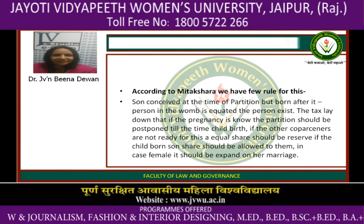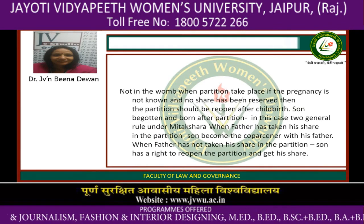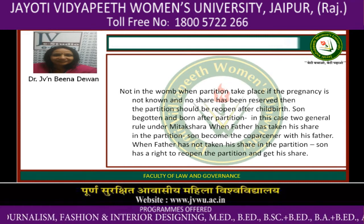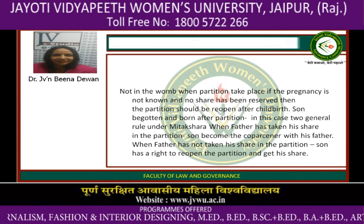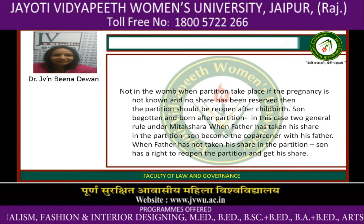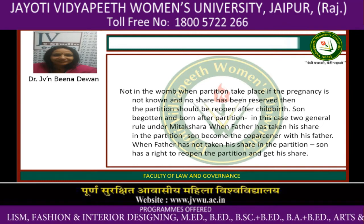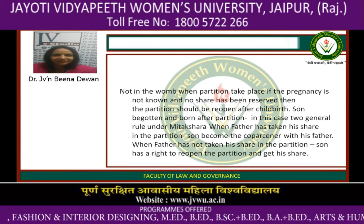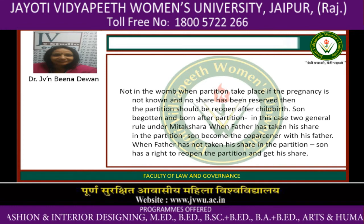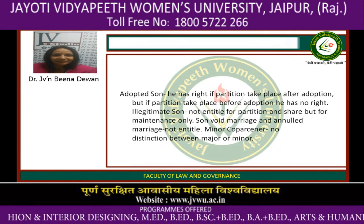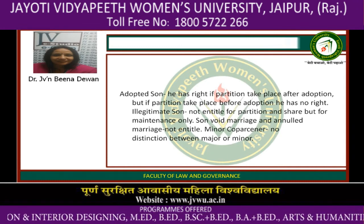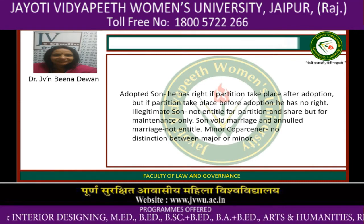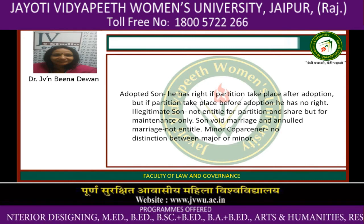If pregnancy is not known and no share has been reserved, the partition should be reopened after childbirth. Son begotten and born after partition: under Mitakshara, two general rules apply — when the father has taken his share in the partition, the son becomes a coparcener with his father; when the father has not taken his share, the son has the right to reopen the partition and get his share. Adopted son: he has the right if adoption takes place after partition, but if partition takes place before adoption, he has no right. Illegitimate son: not entitled to partition and share, but to maintenance only. Son of void or voidable marriage: not entitled.